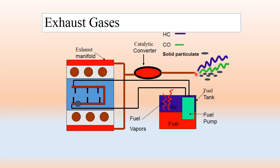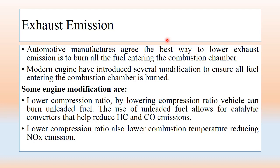Almost all pollutants are observed at the tailpipe, namely HC, CO, solid particles, and oxides of nitrogen. From the fuel tank, you can observe fuel vapors which cause HC emissions. From the crankcase, you can also find HC emissions due to unburnt fuel oil. So automotive manufacturers agree the best way to lower exhaust emissions is to burn all the fuel entering the combustion chamber — completion of the air-fuel mixture inside the combustion chamber is very important.